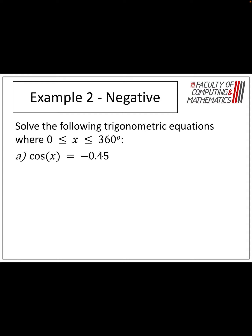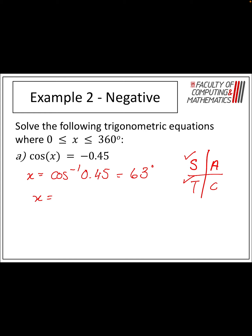I'm not going to put the negative into my calculator. I do cos to the minus one of 0.45, which gives me an answer in the first quadrant — that's 63 degrees. Then I use that to find the two answers I'm looking for. Cos is negative in the second quadrant and the third quadrant, so x equals 180 minus 63 to go into the second quadrant, giving me 117 degrees, and 180 plus 63 for the third quadrant, giving me 243 degrees.